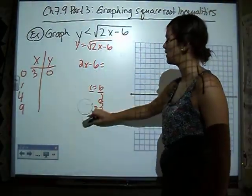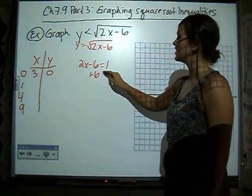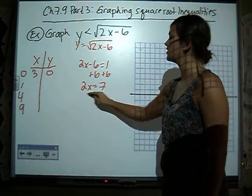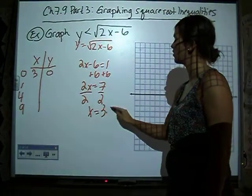If we let 2x minus 6 equal 1, we're going to add 6 and get 2x equals 7, divide by 2, and x equals 7 halves, or 3.5.